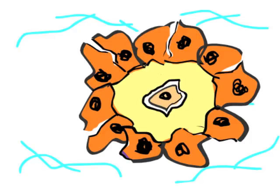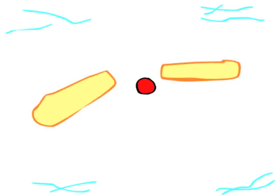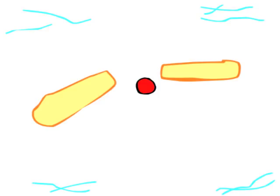This first process is known generally as ossification, and where ossification takes place is known as an ossification center. As intramembranous ossification continues, osseous branches known as spicules are formed. These spicules will eventually touch one another and fuse together, forming a larger piece.